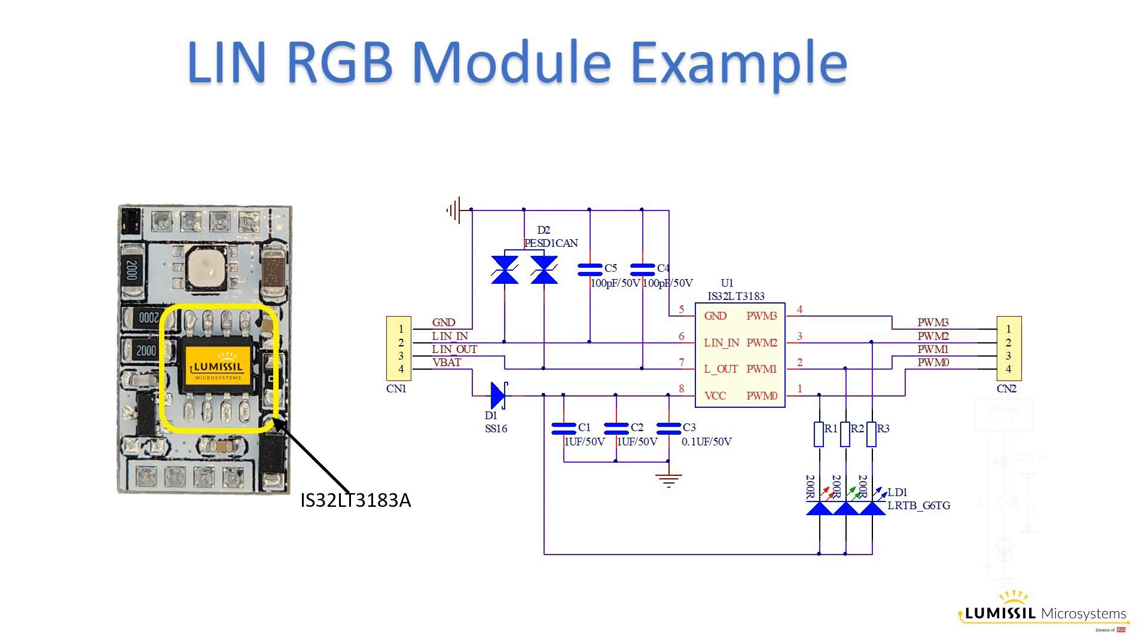There are two 4-pin connectors. Connector one is for power and LIN bus, while connector two is for connecting external LEDs. Remove R1, R2, and R3 when using external LEDs. Also note there are no crystals or ceramic resonators as required by the CAN bus, because there is no need for time synchronization since LIN has no bus arbitration.